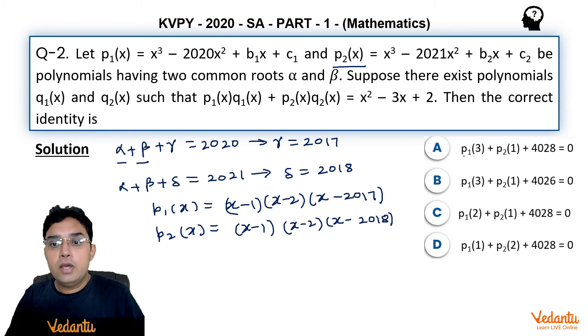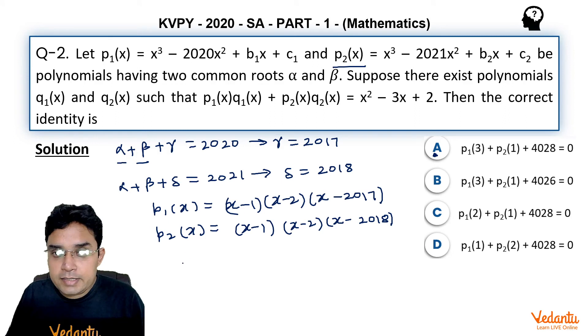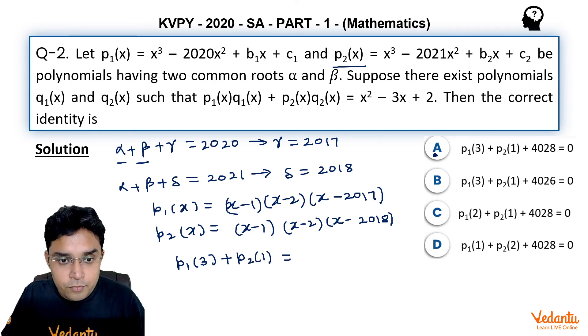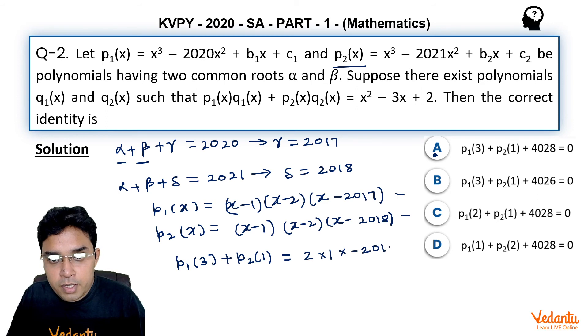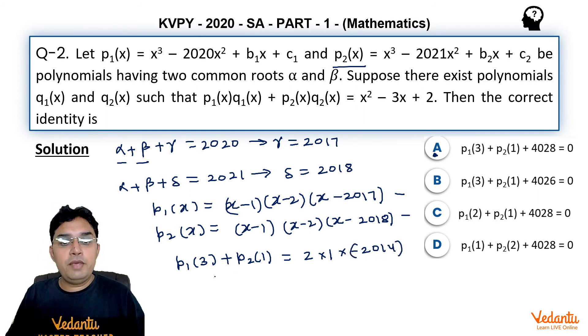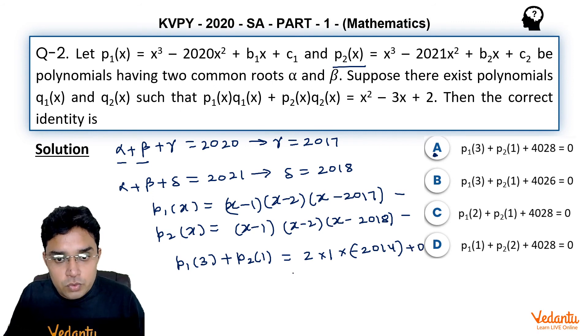Now let us read options one by one. So option A, it is saying p₁(3) + p₂(1). If I put these values of x = 3 and 1 in p₁(x) and p₂(x) respectively, we will be getting (3 - 1), that is 2, then into 1 here, and into -2014. This is for p₁(3), and p₂(1) will be nothing but 0 because 1 is the root of p₂. So here we are getting -4028. So this p₁(3) + p₂(1) + 4028 seems to be correct.